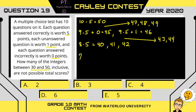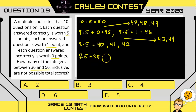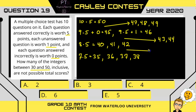What if we get 7 correct? Well, that's a total score of 35. The other three questions — you can get them all incorrect and get 35, or leave one unanswered and get 36, two unanswered and get 37, or all three unanswered and get 38. We are missing the score of 39.